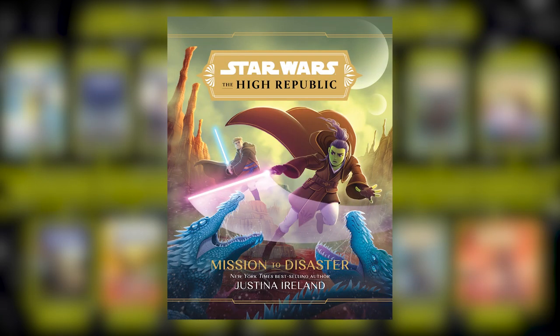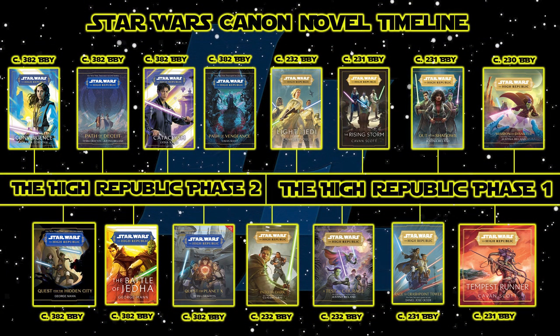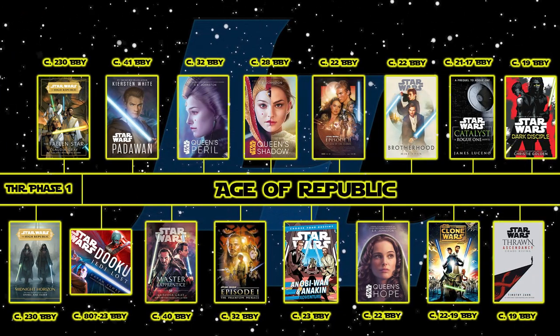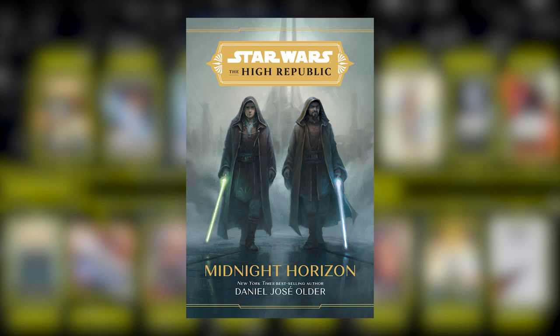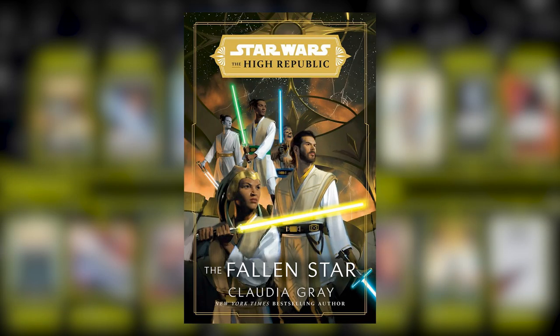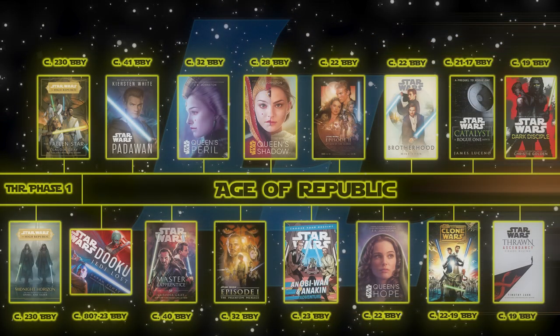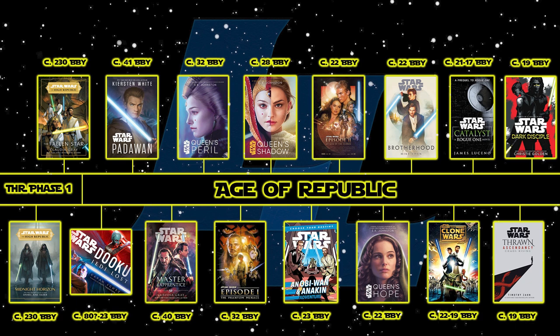Next you move on to Mission to Disaster, taking place in 230 BBY and starting The High Republic Phase 1 Wave 3. Next on the timeline is Midnight Horizon by Daniel José Older, a young adult novel in 230 BBY that takes place right before The Fallen Star by Claudia Gray, the final adult novel in Phase 1. The Fallen Star did release first out of the three, but it takes place last on the timeline — though again I would recommend reading it first if you are looking for a recommended reading order. That concludes the High Republic part of the timeline.